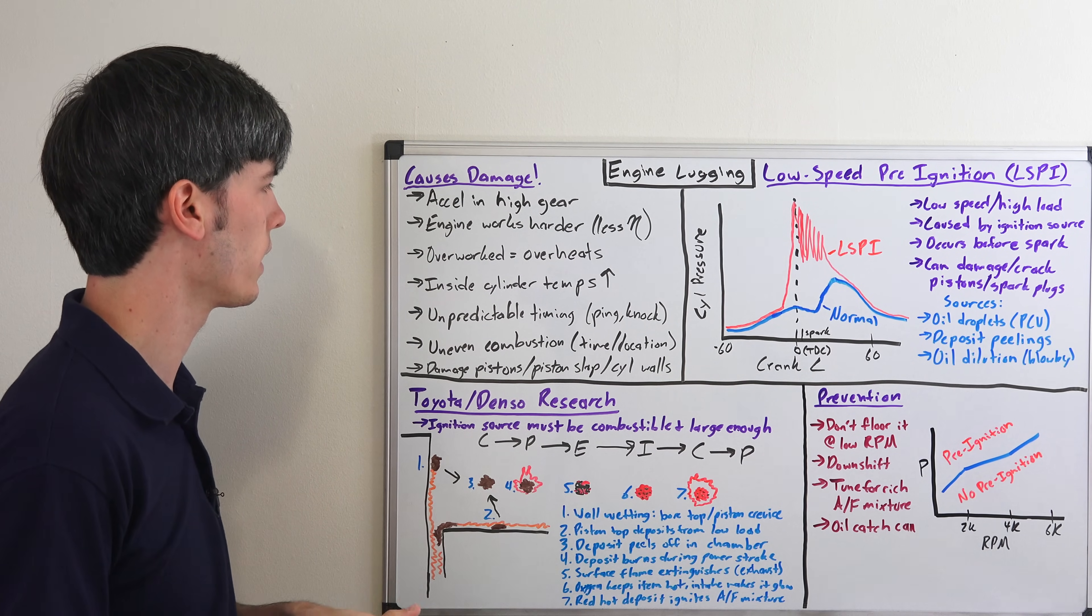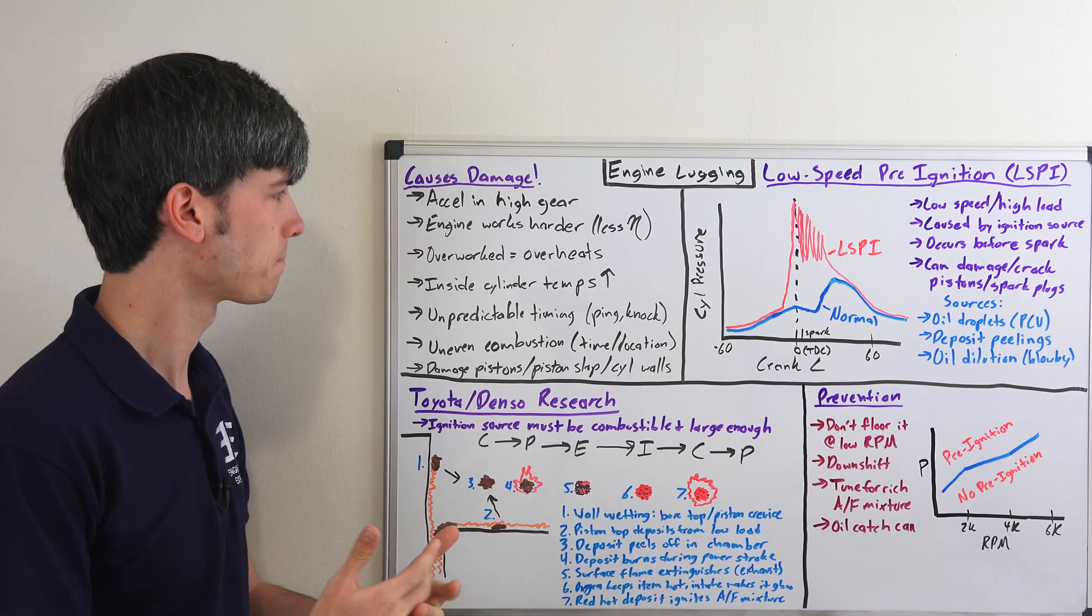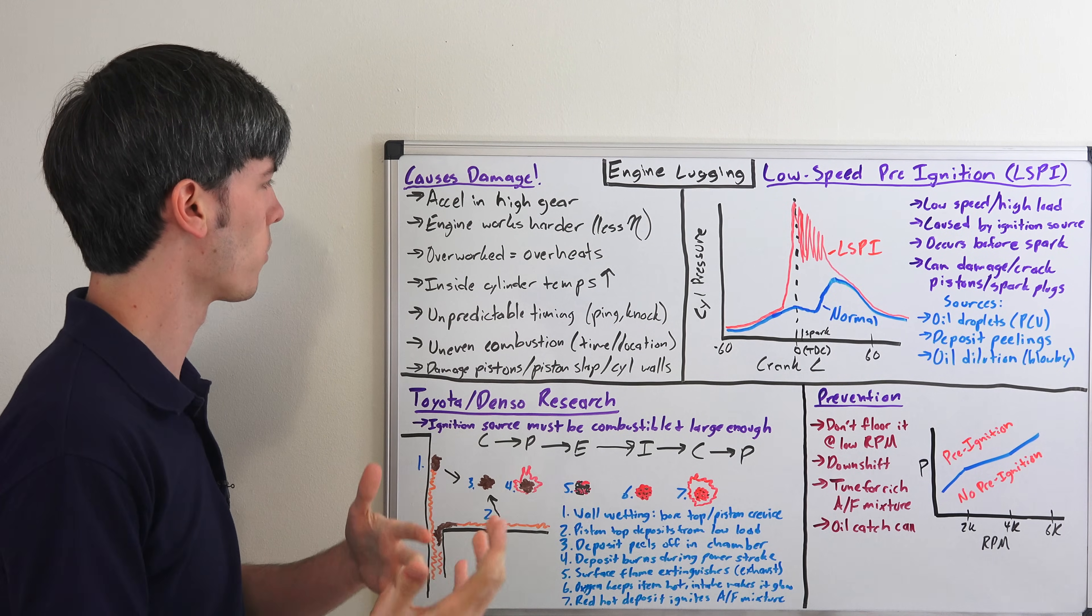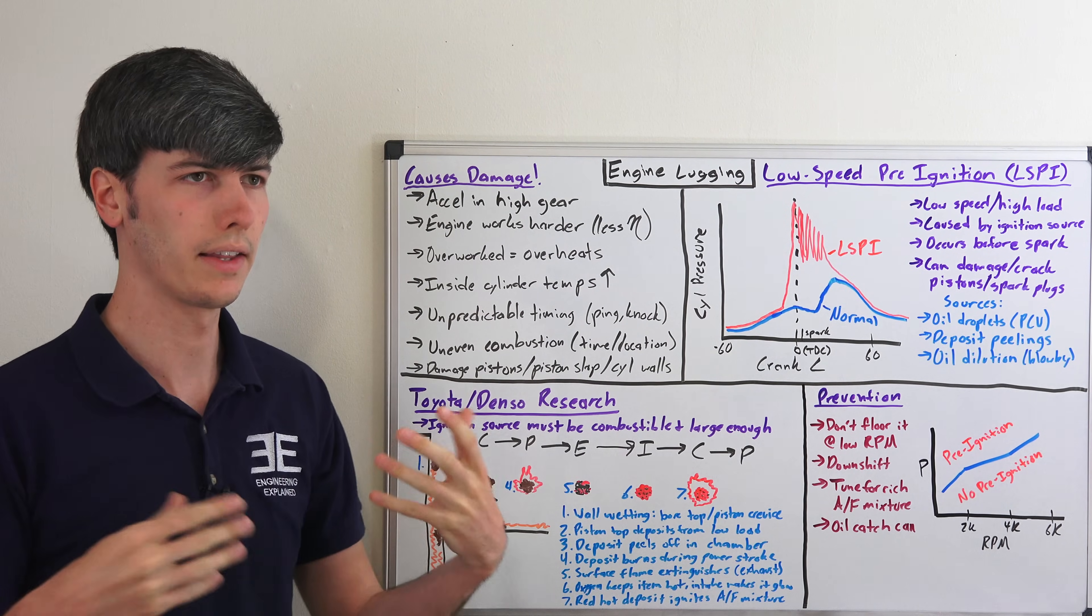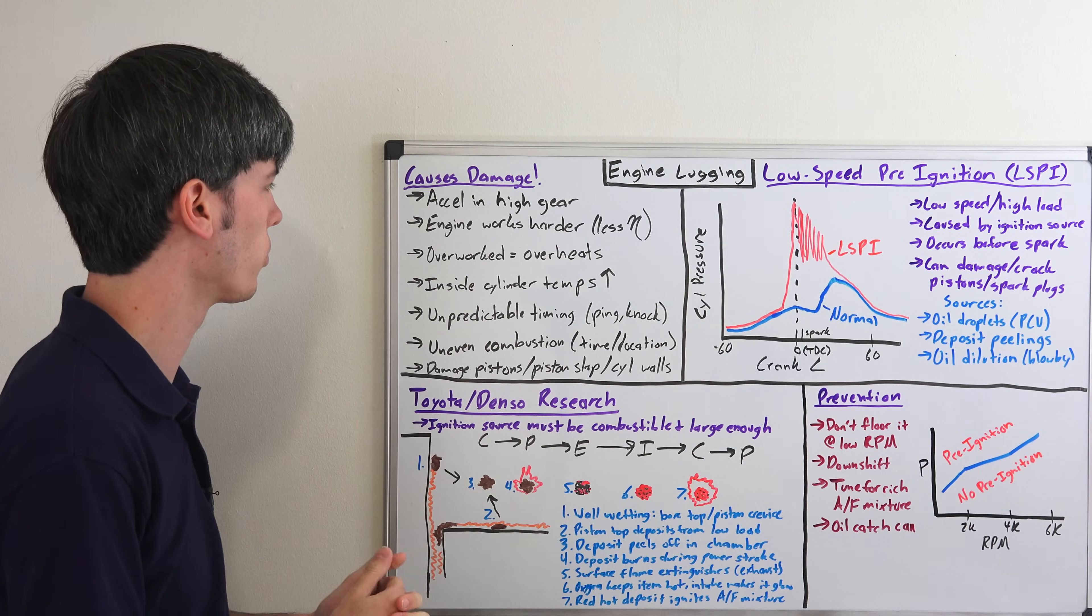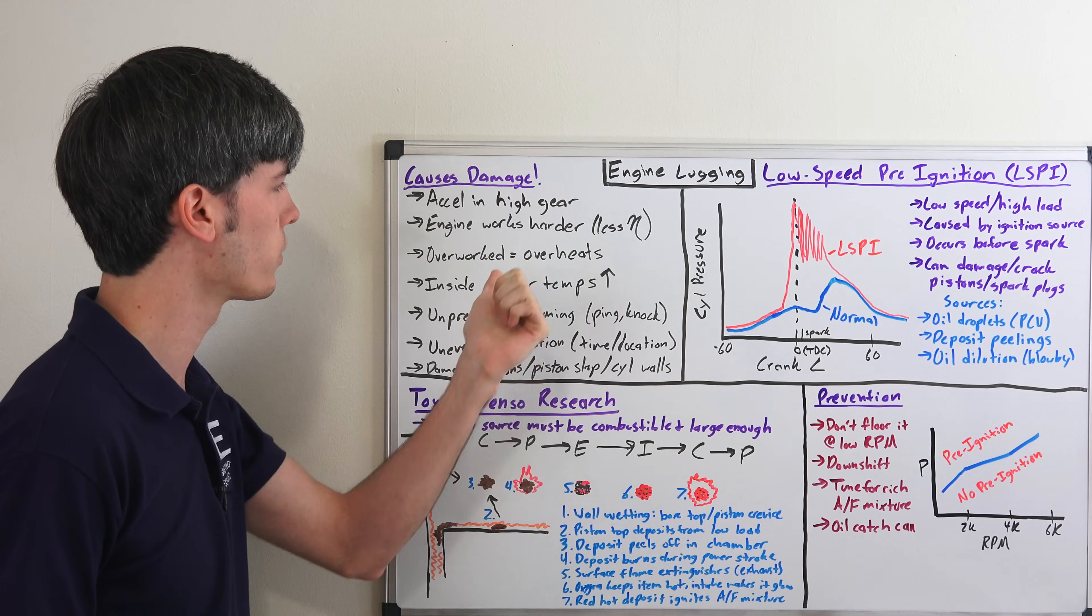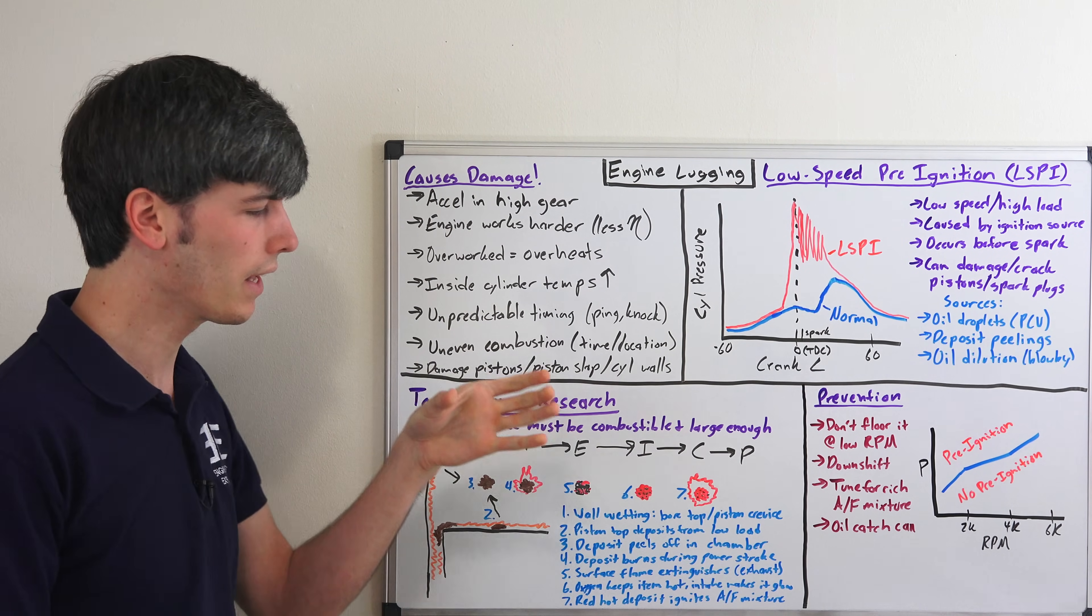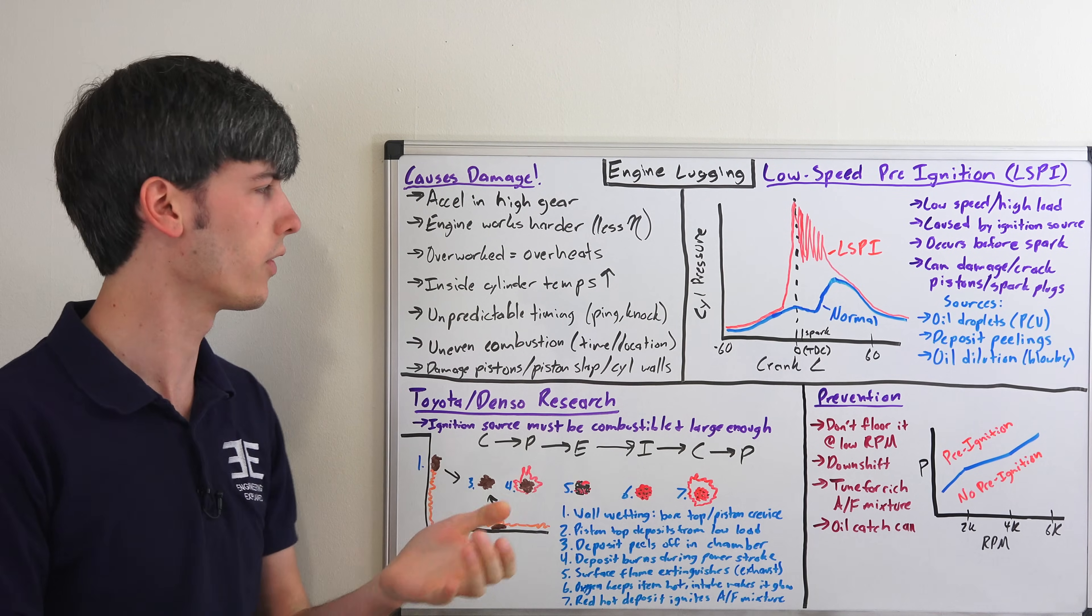If it's operating in a less efficient range, it's going to heat up more because efficiency correlates with heat. So you have more heat going into the engine block itself rather than just into useful work. So as you overwork that engine, temperatures inside your cylinders heat up.